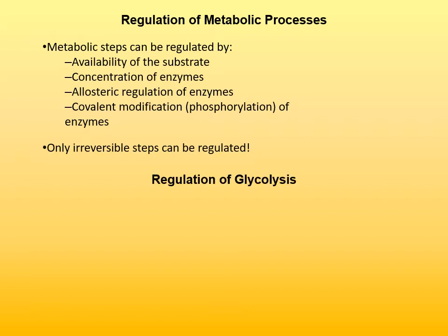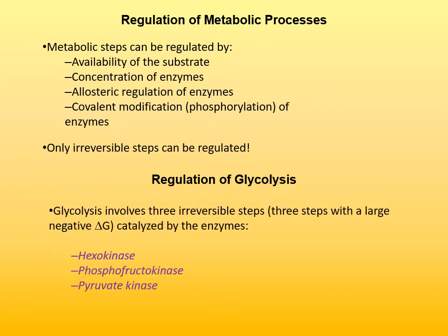When we consider regulation of glycolysis itself, we have identified three irreversible steps in the glycolysis pathway. Those three irreversible steps are steps that have large negative delta G — they are exergonic. So they are the ones that can be regulated, and are regulated. They are catalyzed by enzymes hexokinase, phosphofructokinase, and pyruvate kinase.